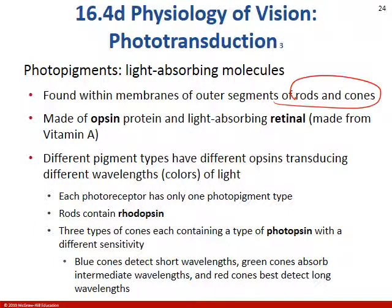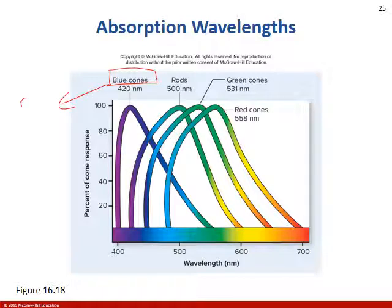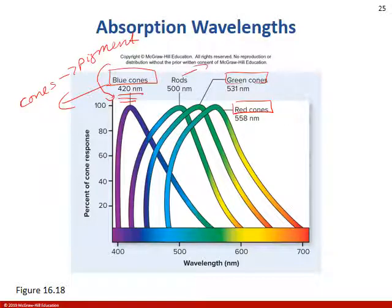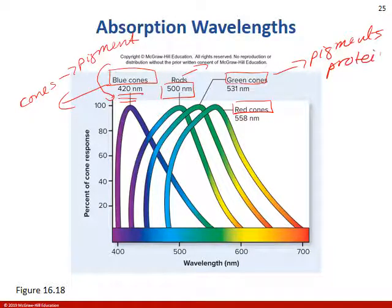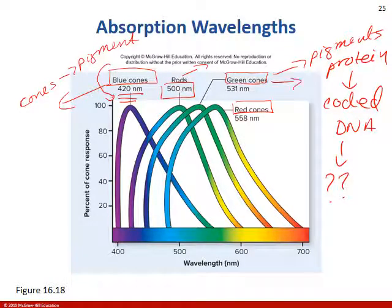In the rods and cones there are photopigments — proteins that can absorb light at specific wavelengths. We have blue cones, green cones, and red cones, each containing a pigment absorbing at different wavelengths. Rods have a protein that absorbs at about a greenish wavelength of light. Since pigments are proteins, and proteins are coded for in your DNA, it's possible to be missing, say, green cones — you wouldn't make that pigment and therefore couldn't absorb light at that wavelength. You could be colorblind.